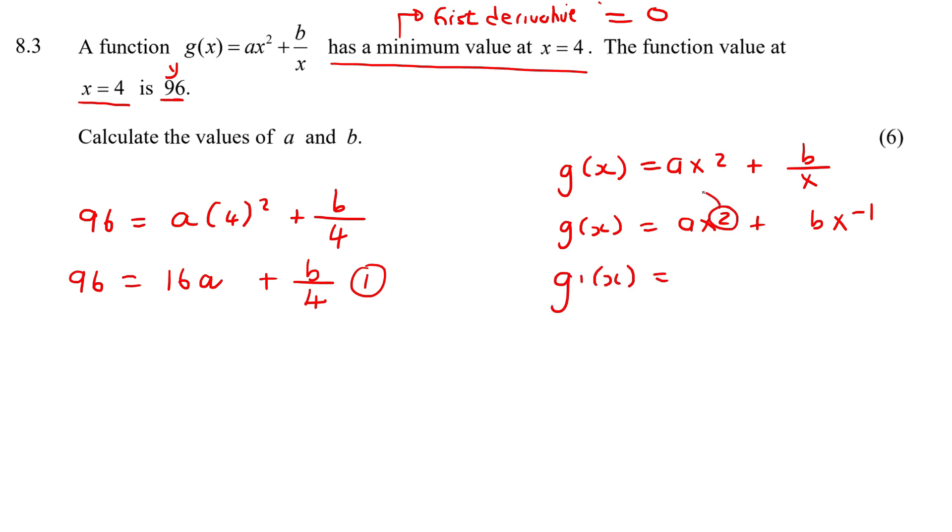So you multiply this 2 to the front. So that'll become 2a. And then you're gonna just subtract 1 from this exponent. So that'll just be a 1. And then this minus 1, you're gonna multiply to the front. So that'll become minus b. And then you're gonna subtract 1 over here. So that'll become negative 2.